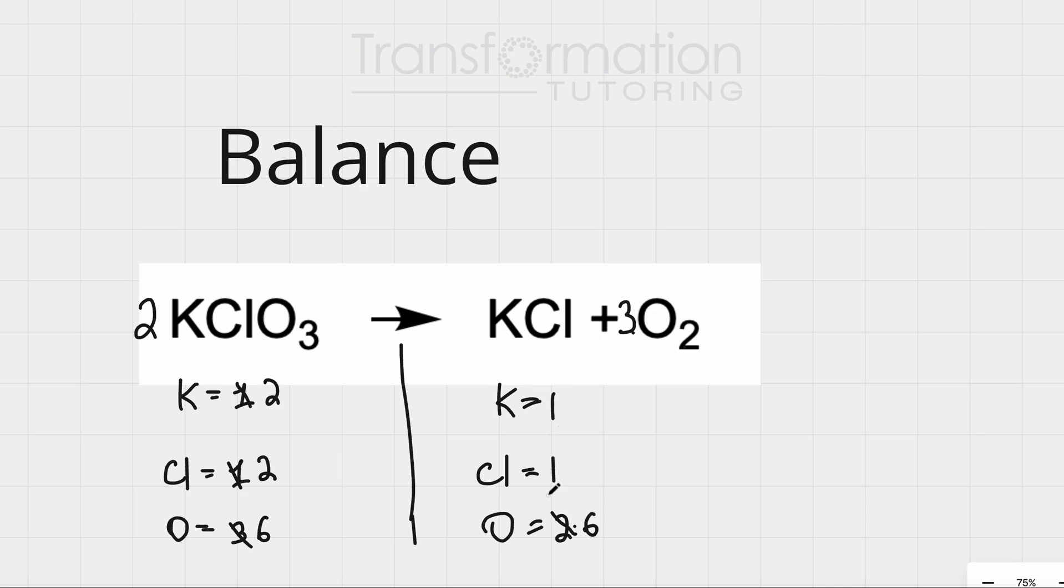And here we have 1 and 1. So, now we have a problem. How can we fix it? We need K and Cl to be 2, but they are 1. So, what do we do? We add a 2 in front of here. So, instead of 1, now we have 2 Ks and we have 2 Cls.